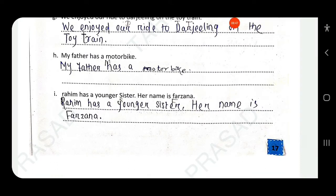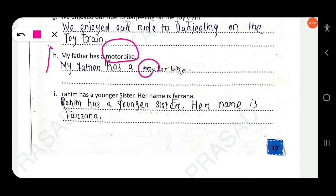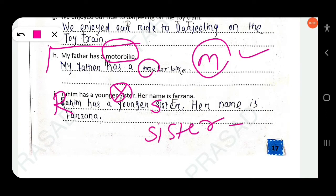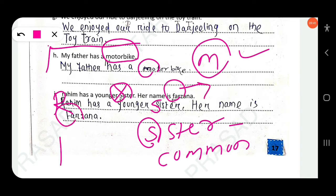Next: 'My father has a motorbike.' Motorbike is a common noun, not a proper noun, so m should be written in small letter — write the same sentence with small letters. Next: 'Rahim has a younger sister. Her name is Farjana.' Rahim — R should be capitalized. Sister is a common noun, so even if it is written in capital by mistake, you must write it in small. Farjana — F should be capitalized because it is the name of a particular person.